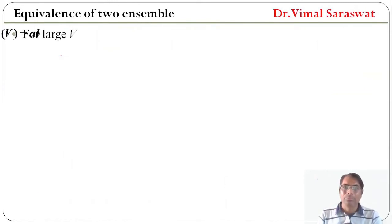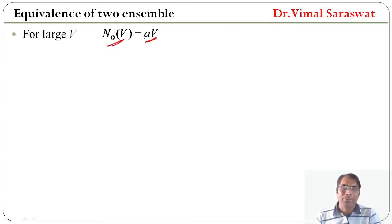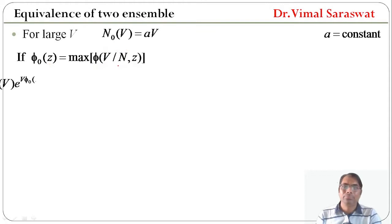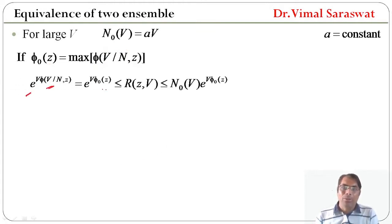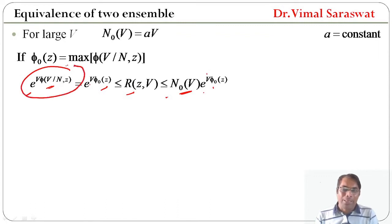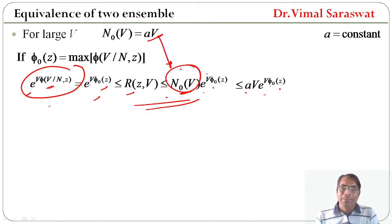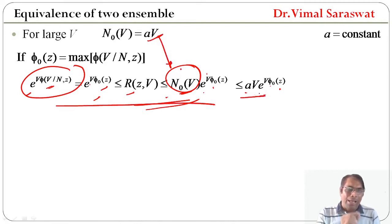For large volume, n₀(V) equals a times V, where a is any constant. If phi₀(z) is the maximum value of phi, and phi is the function of V/N and z, then e raised to V phi₀ is less than or equal to r, which is less than or equal to n₀(V) times exponential of V phi₀(z). Since n₀(V) equals aV, this becomes: e raised to V phi₀(z) is less than or equal to r, which is less than or equal to aV times exponential of V phi₀(z).